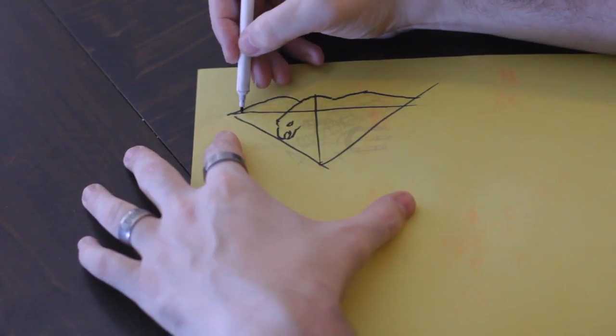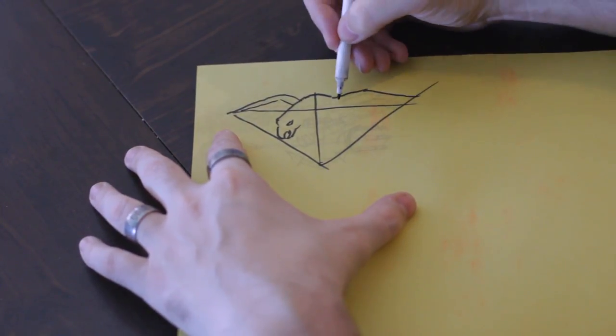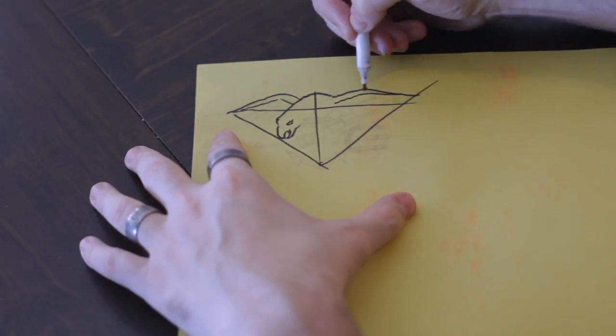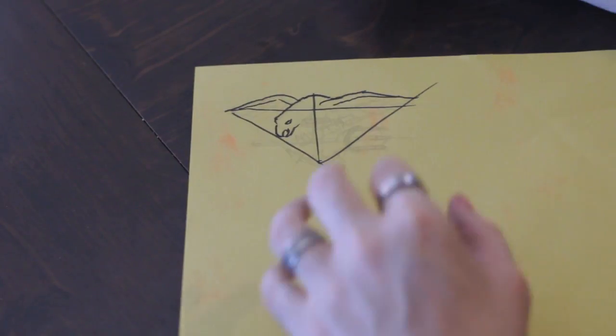Then if you want you can fill in the wings. We're just going to draw this real quick so we have a basic idea of what it is we're looking at here. And again you can look this up on the internet.